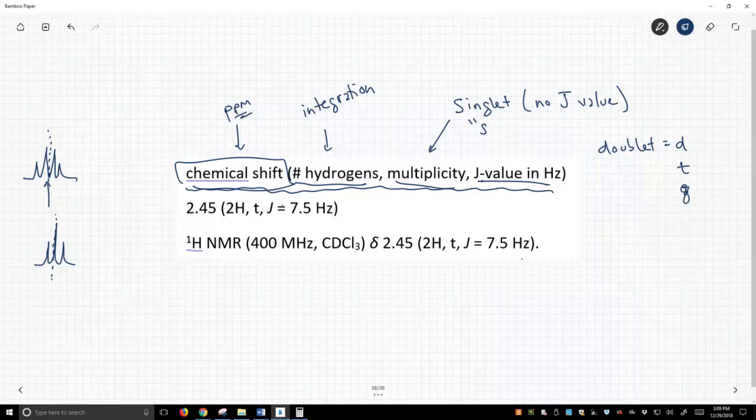And then, of course, you can have complex multiplicities like DD for doublet of doublets or DT for doublet of triplets. If you have a DD or DT, you're saying there are two separate coupling constants. So you will report two separate J values.